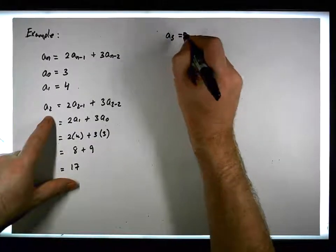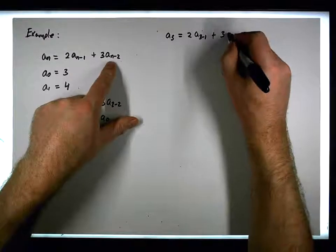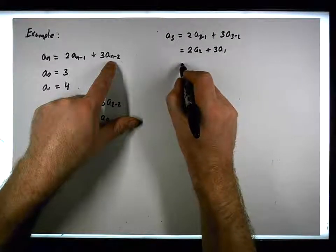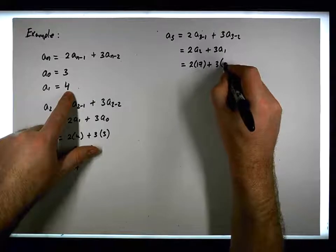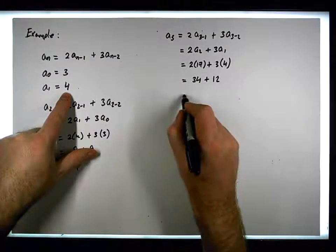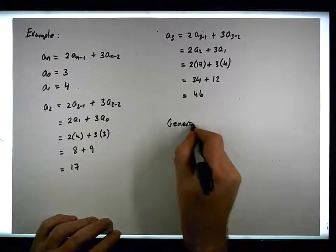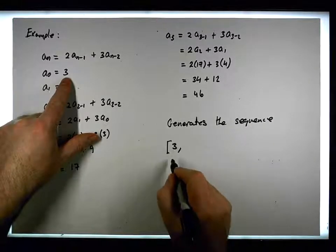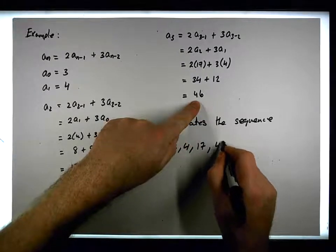We can continue to get the next term. For a₃: it must equal twice the previous term, which is a₂, plus three times the term before that, which is a₁ — effectively two times a₂ plus three times a₁. We know a₂ is 17, so this is two times 17 plus three times four. Two times 17 is 34, plus 12, giving us 46.